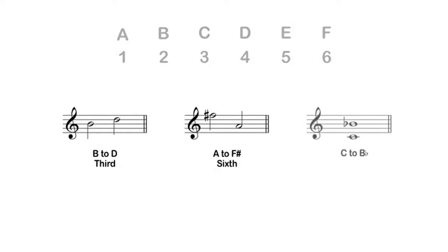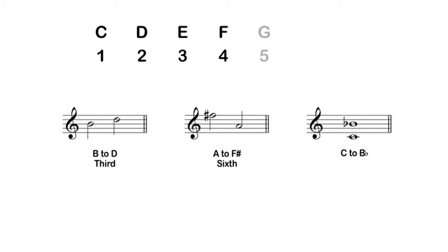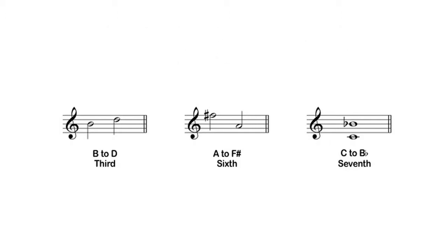In this example, where C and B sound simultaneously forming a harmonic interval, C is one, D is two, E is three, F is four, G is five, A is six, and B is seven — so this interval is a seventh.